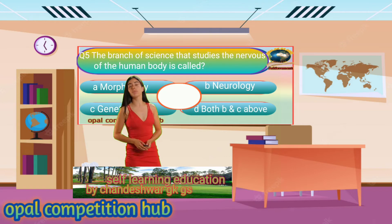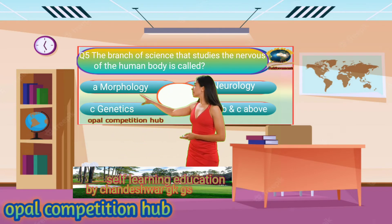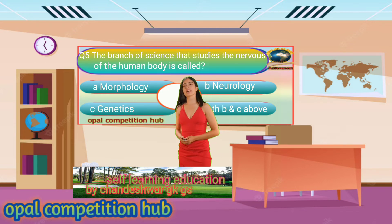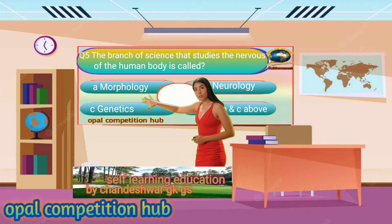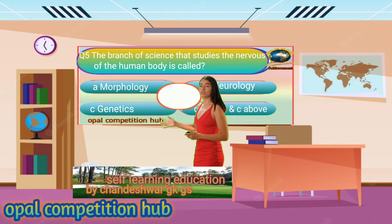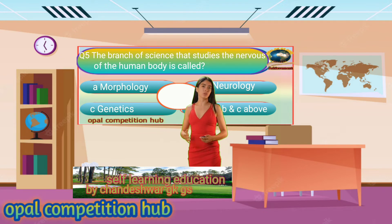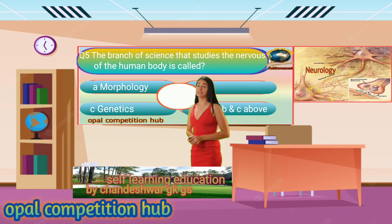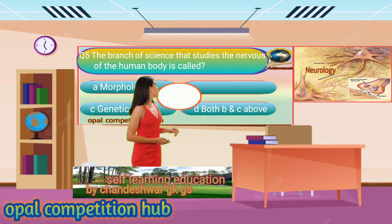Question number 5. The branch of science that studies the nervous system of the human body is called. Your options are: Option A. Morphology, Option B. Neurology, Option C. Genetics, Option D. Both B and C above. Your time starts now. Your answer will be Option B. Neurology.